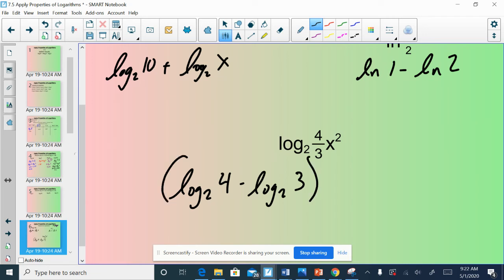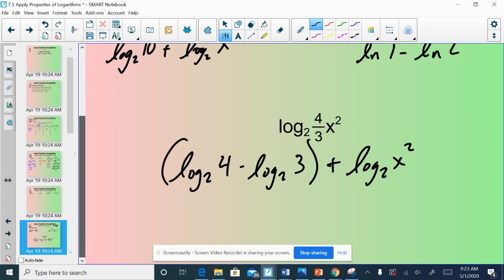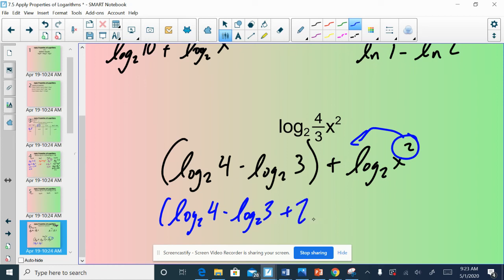I'm actually going to put parentheses around those to kind of signify that this is a fraction. And then it's going to be added with log base 2 of x squared. Because this is a multiplication. And multiplication gets turned into addition when you give it its own log. Now, this isn't completely expanded because I want that exponent to be written out front. So my answer here would be log base 2 of 4 minus log base 2 of 3 plus 2 log base 2 of x.